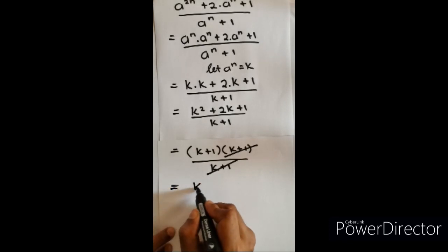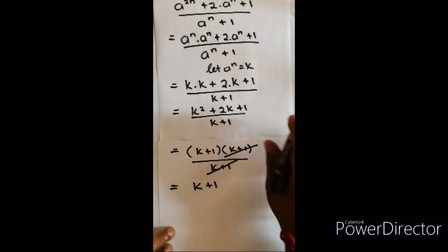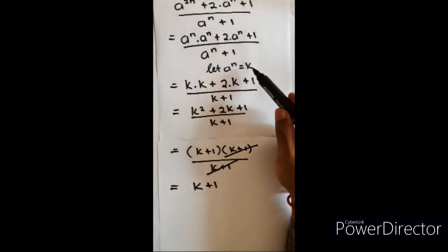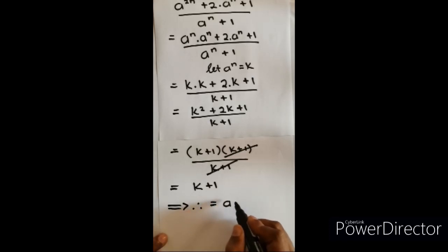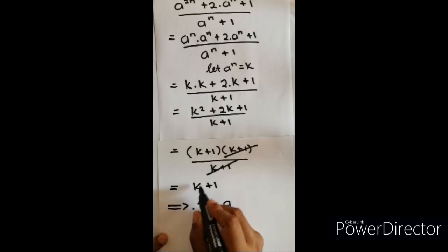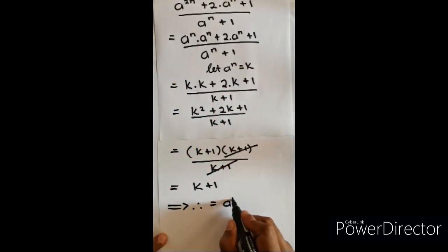And I'm now left with k plus one. But now I must not forget, remember in the beginning to use the k method I let a to the n equal to k. I then substitute the a to the n back. Therefore my answer will equal to a, remember k is equal to a to the n, plus one.